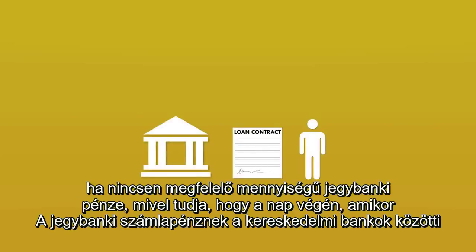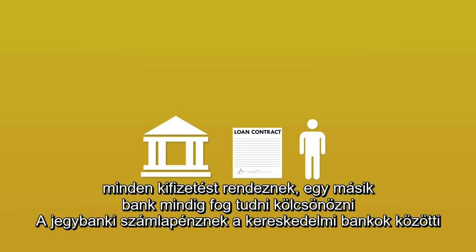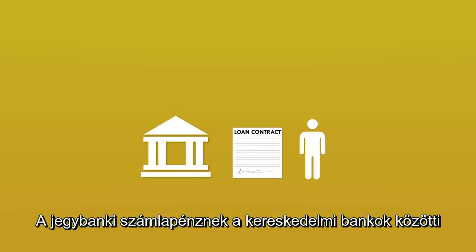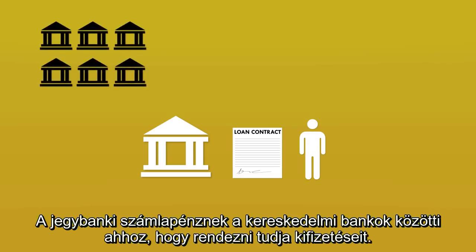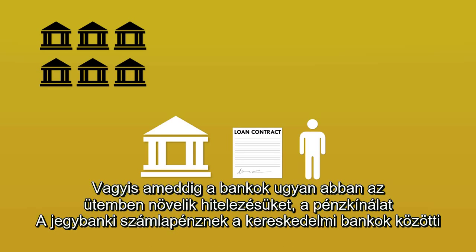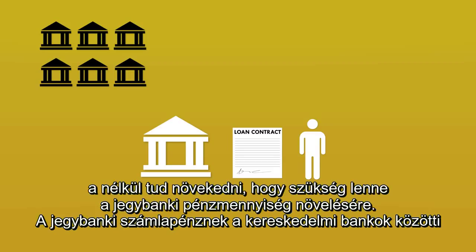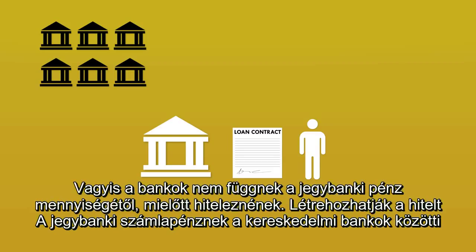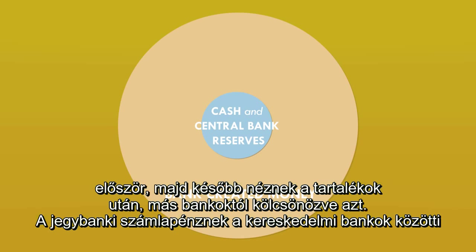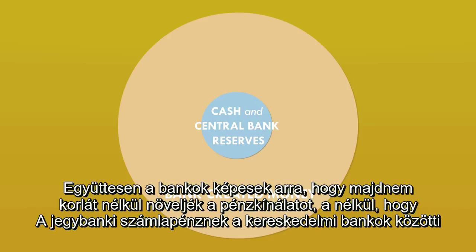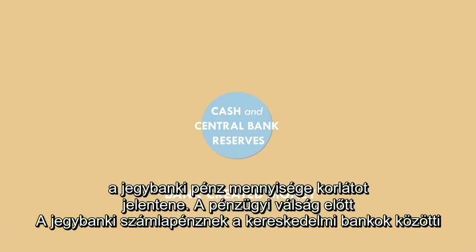So a bank can actually make a loan — creating new money in the hands of the public — even if it doesn't have the reserves, because it knows that at the end of the day, when all payments are netted out, another bank will be willing to lend it some reserves to settle its payments. This lending of central bank reserves between commercial banks is called the interbank lending market. As long as all banks are increasing their lending at roughly the same rate, the money supply can keep increasing without the need for additional reserves. Banks don't really depend on having reserves before they can create money; they can make the loan first and find the reserves afterwards. Collectively, banks can increase the money supply almost indefinitely without being restrained by the amount of central bank reserves.